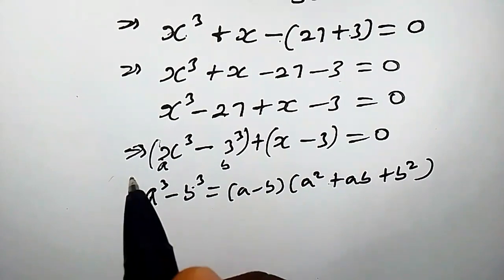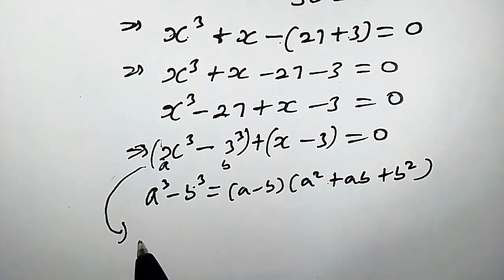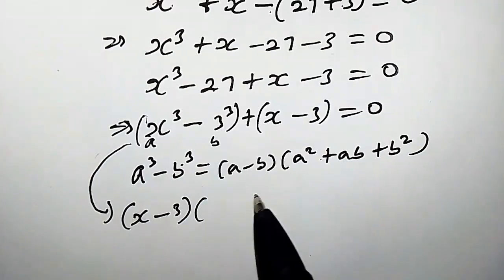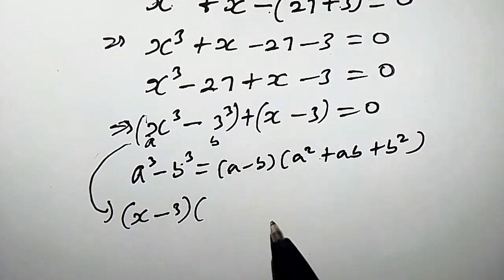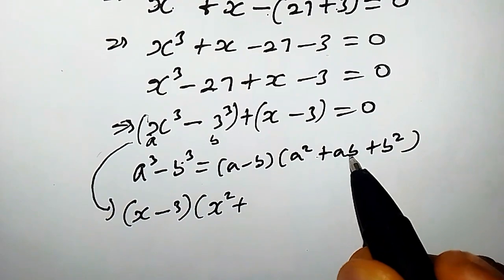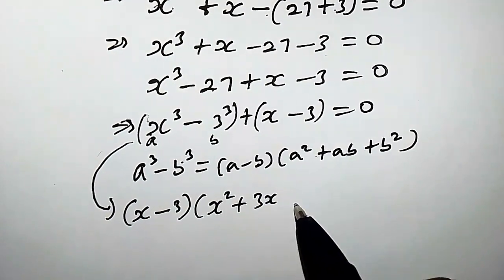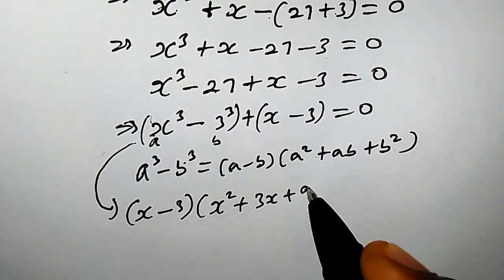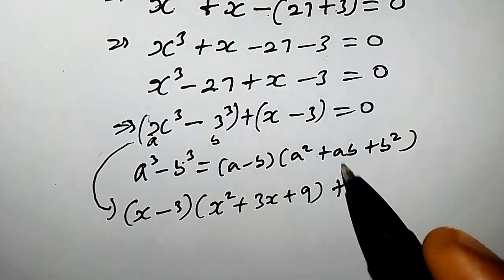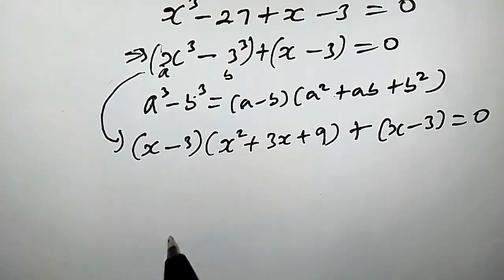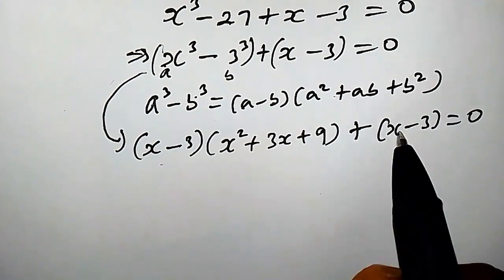Using these properties, we're going to have: a is x, b is 3. So we'll have x minus 3, times x squared plus a times b, that is x times 3 which is 3x, plus b squared. Since b is 3, that's 3 squared which is 9, plus the remaining term x minus 3, equals 0. We observe that x minus 3 is common, so we can pull it out.